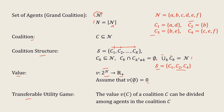A transferable utility game, or TU game, is one class of games where the value of any coalition can be divided among the agents in that coalition. Suppose the value of C1 is 5; then this 5 can be divided between A and D in some manner. Then it is a transferable utility game.